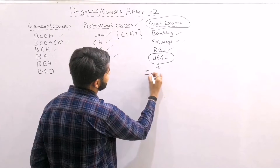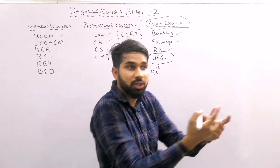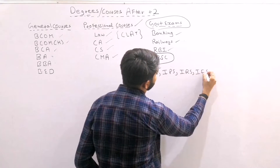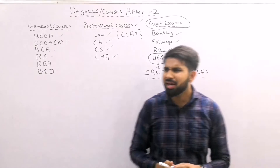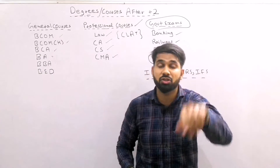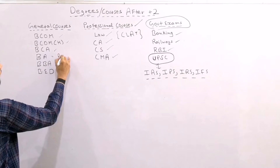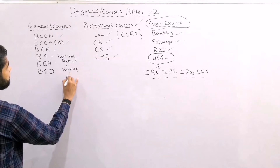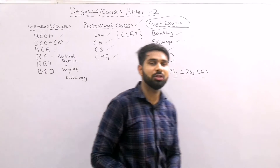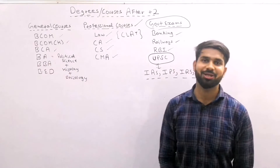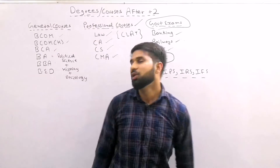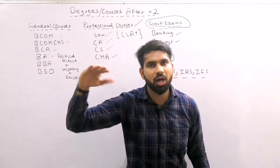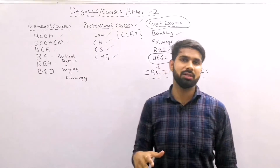Under UPSC, you can become IAS — DM, Collector Sahab — at the district level. After that we have IPS, IFS, and other services. I mentioned that BA is considered for average students in our country, but let me clear that — BA subjects like Political Science, History, and Sociology are the main exam subjects for UPSC. So kids who want to do UPSC know that the graduation degree is BA, because these subjects are core to the main exam. Never degrade BA.